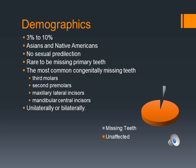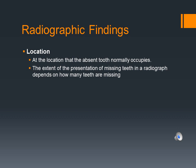The most common congenitally missing teeth, beginning with the most prevalent, include third molars, second premolars, maxillary lateral incisors, and mandibular central incisors. The absence of these teeth can occur unilaterally or bilaterally.